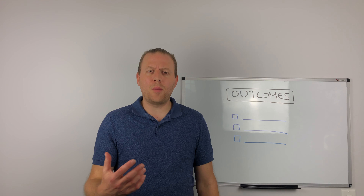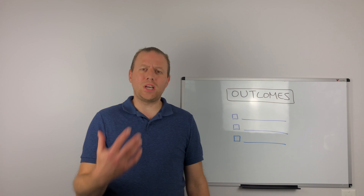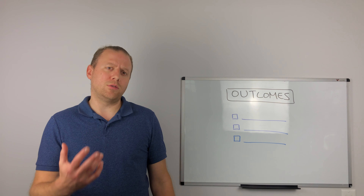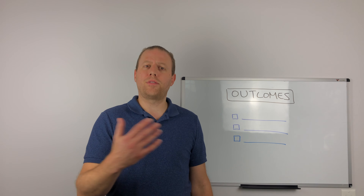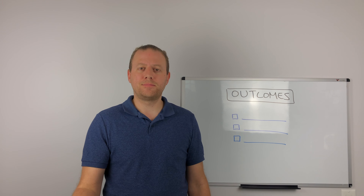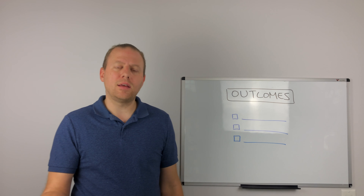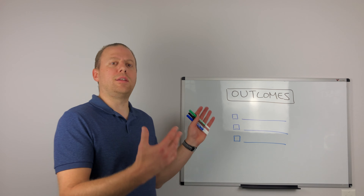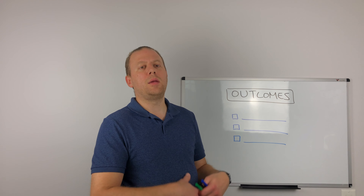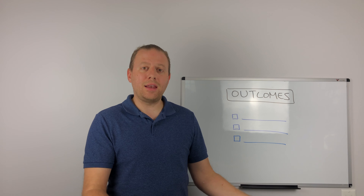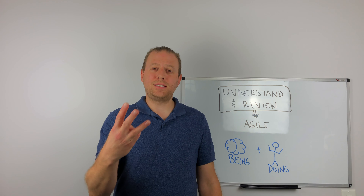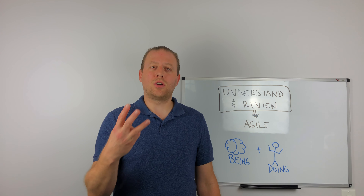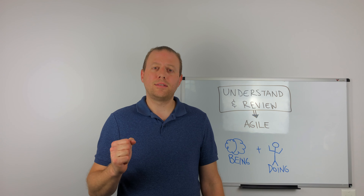One point to pay attention to is that Agile should not be the vision. Agile is not the goal. Agile is not the place to be. Agile is a potential means — through ways of thinking, being, and doing — to achieve the vision.